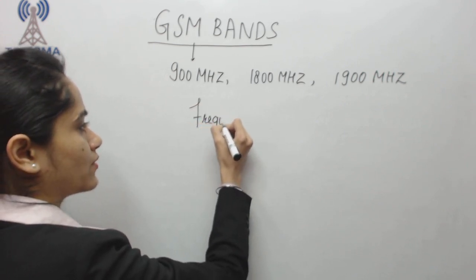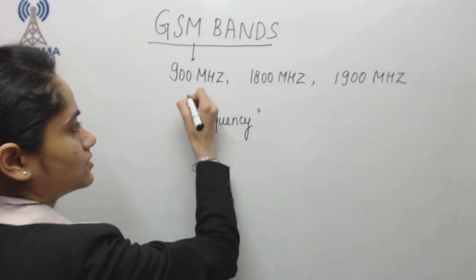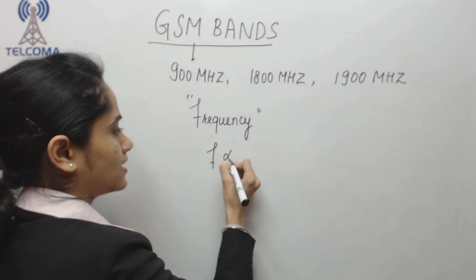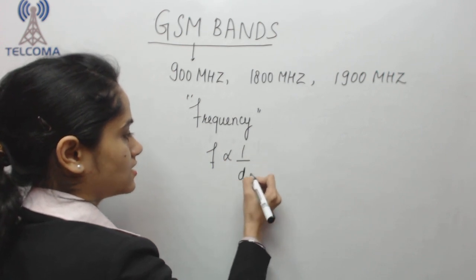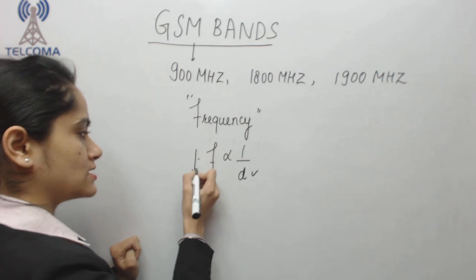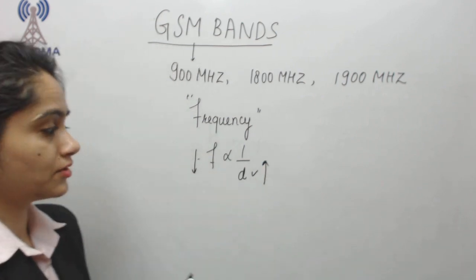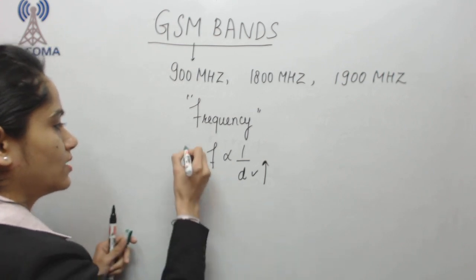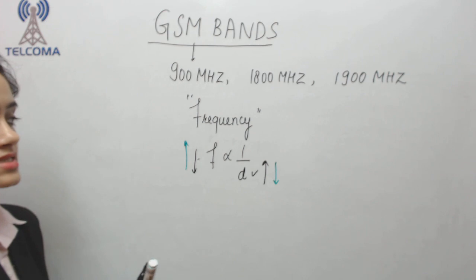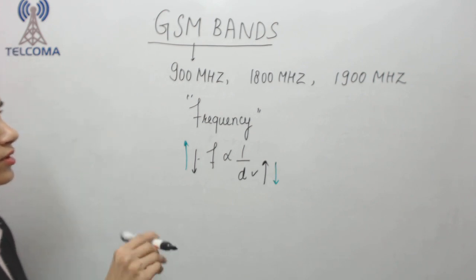For radio communication we require frequency. There is a relationship between frequency and distance — frequency is inversely proportional to distance. So if you have a lesser frequency, it will cover a greater distance, and if you have a higher frequency, the distance covered will be less.